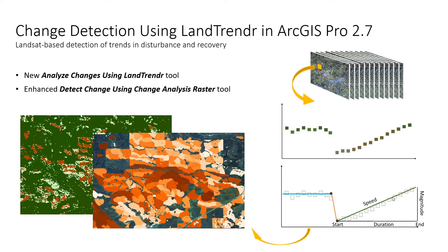From this change analysis raster, we can extract information and create disturbance and recovery maps, as well as time series classification. Two GP tools are used to support this workflow: a new Analyze Change Using LandTrendr tool, and an enhanced Detect Change Using Change Analysis Raster. I'll show how this new capability can be used in a real-world application.